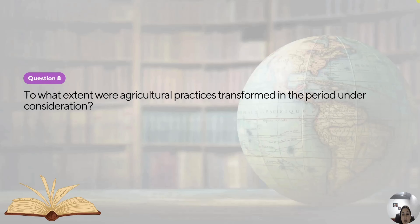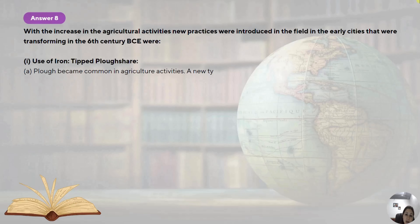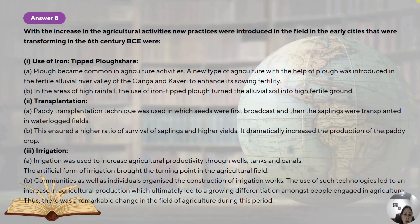Question number eight: to what extent were agricultural practices transformed in the period under consideration? There was an increase in agricultural productivity because of several reasons. First, use of iron — because it is the Iron Age — specifically iron-tipped ploughshares were used. The plough became common in agricultural activities. A new type of agriculture with the help of the plough was introduced in the fertile river valleys of the Ganga and Cauvery. In areas of high rainfall, the use of iron-tipped ploughs turned the alluvial soil into highly fertile ground. Earlier ploughs were wooden-tipped, but now iron-tipped ploughs turned the soil much more easily and faster.